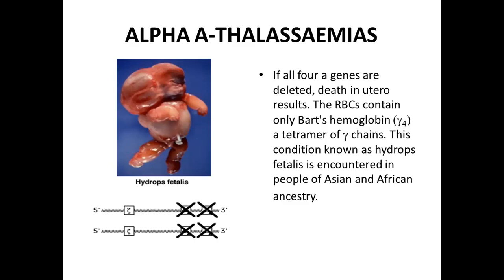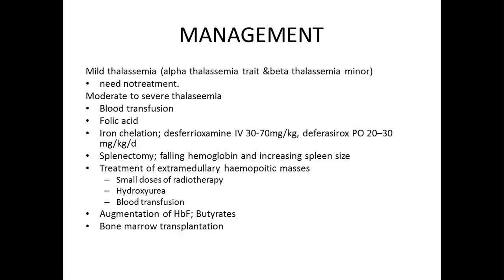In Hemoglobin H disease, patients have a full picture of thalassemia — anemia, possible hemolytic features. Blood complete examination shows microcytic hypochromic anemia; peripheral smear shows poikilocytosis, anisocytosis, and target cells. Heinz bodies can be detected with special staining. In Hydrops Fetalis the condition is found during intrauterine life, and when delivered the baby has a distorted shape due to severe edema.